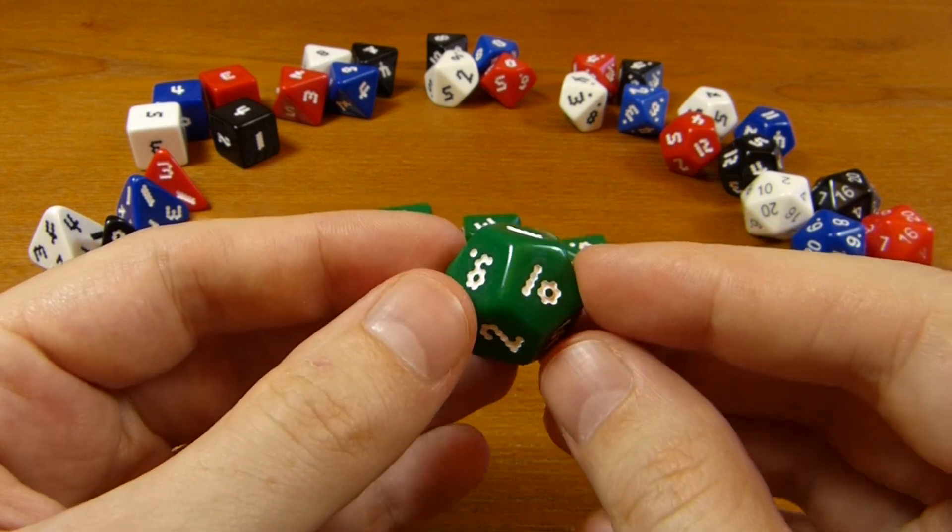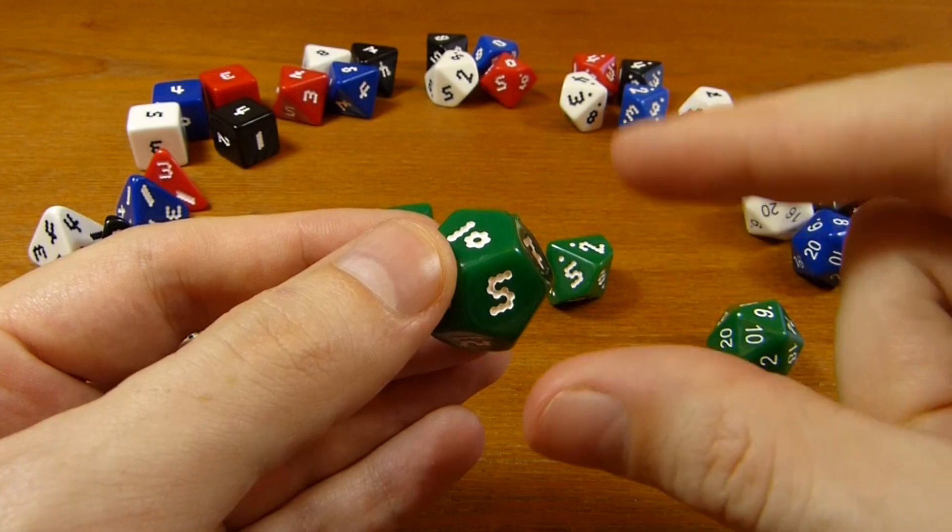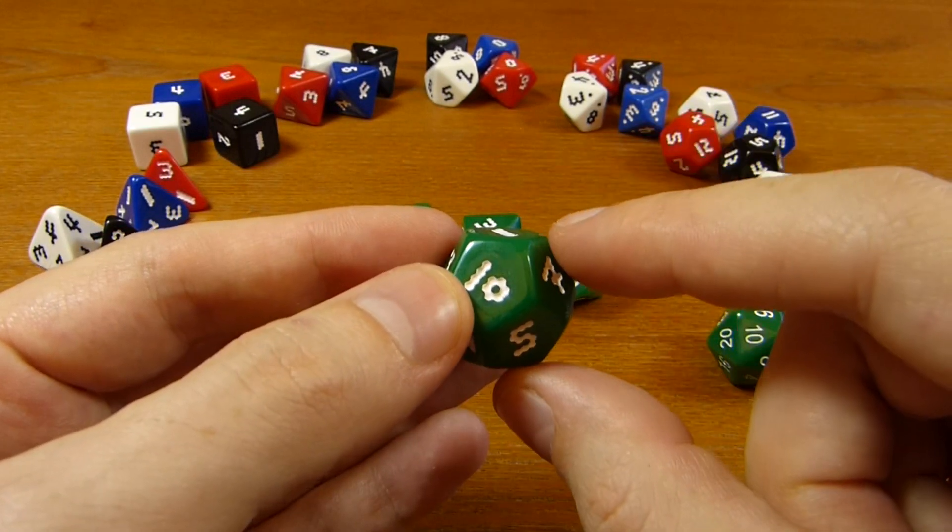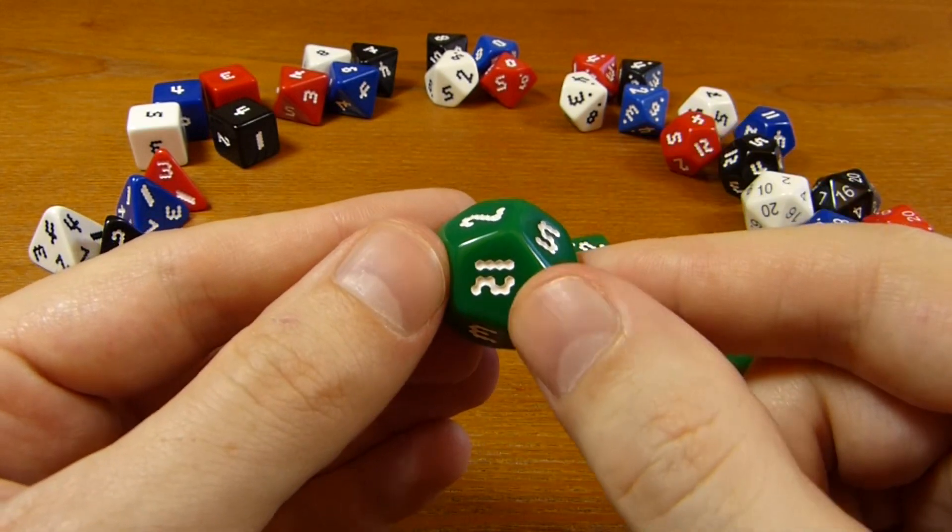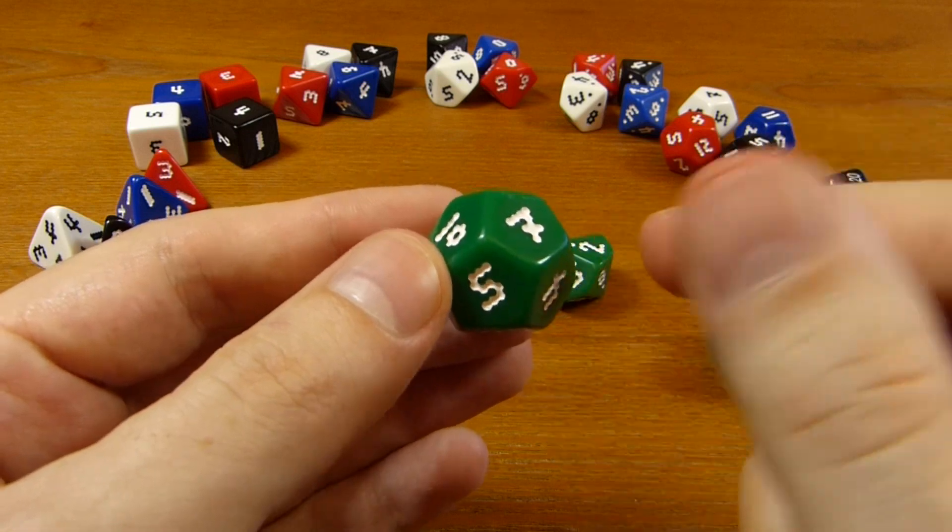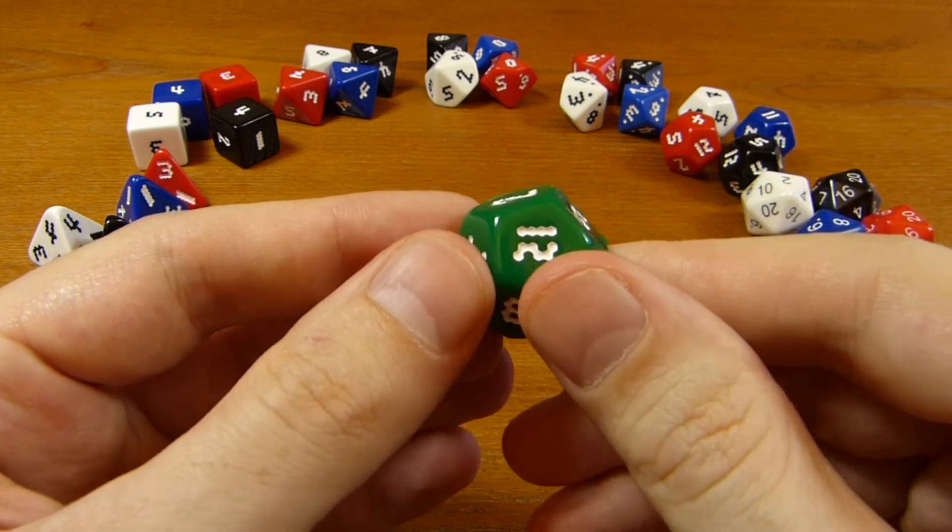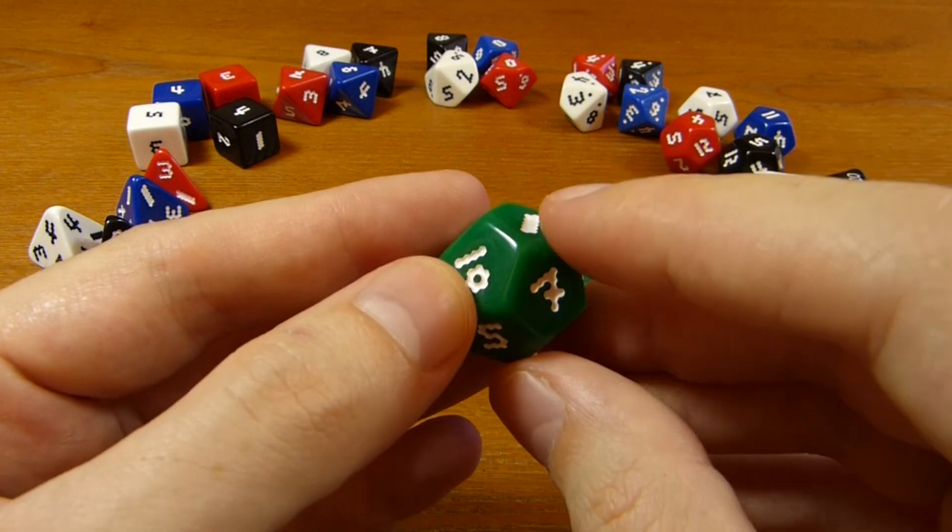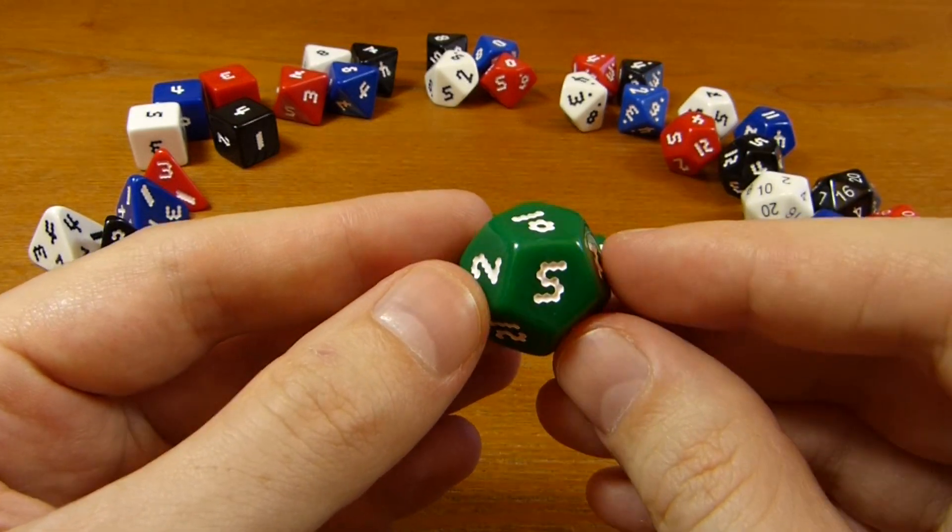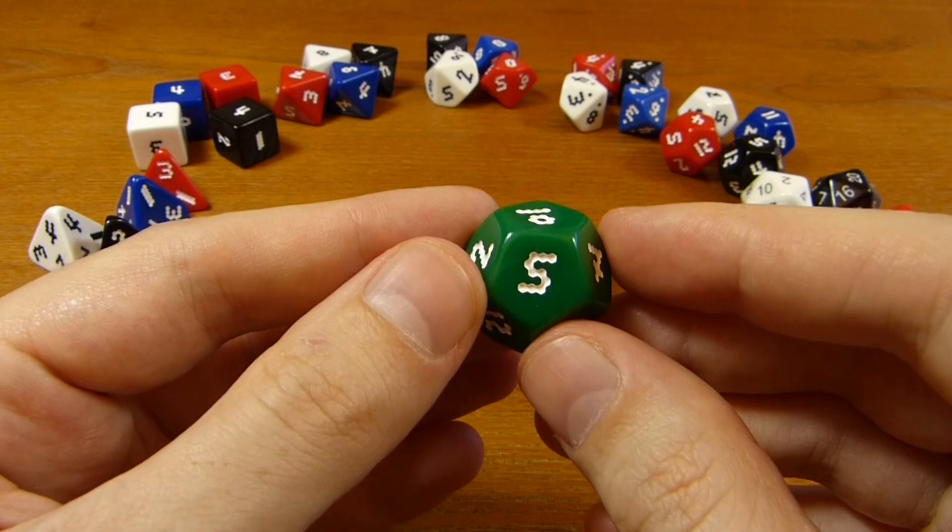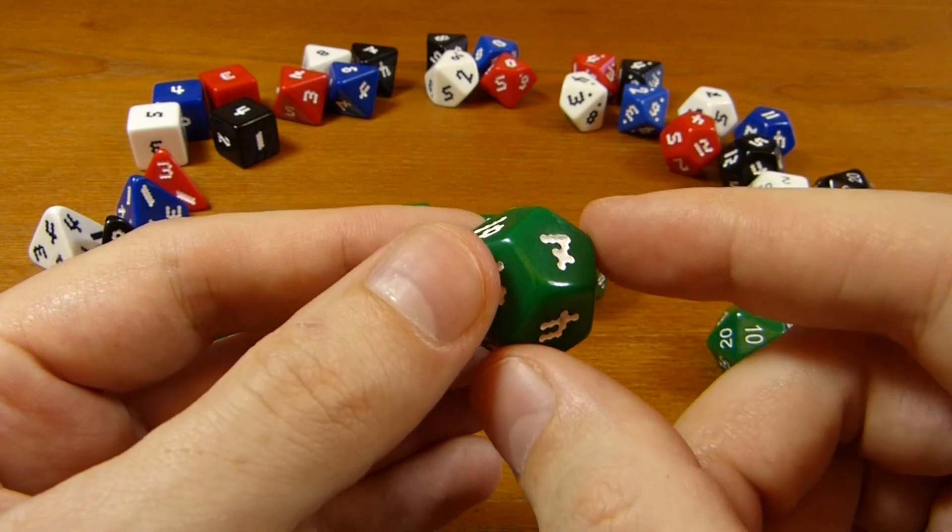Well, you could imagine one way in which a die could be unfair is that if it's sort of squished down vertically, so it's more like a coin, then it's much more likely that those two sides are going to show up than any of the others. And if you number it this way, then even if it's very likely that you're going to be on one of these two opposite sides, at least you're not going to roll high or low. So there's balancing between opposite sides of the die.